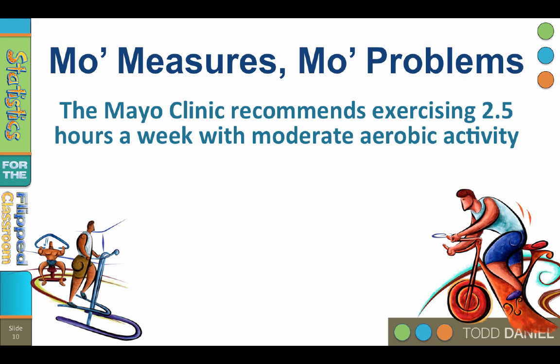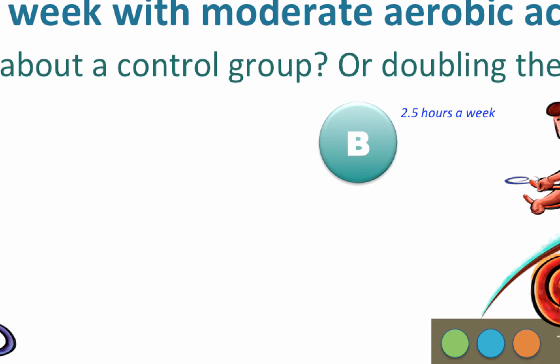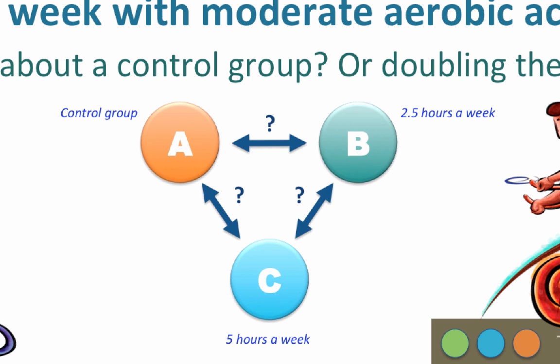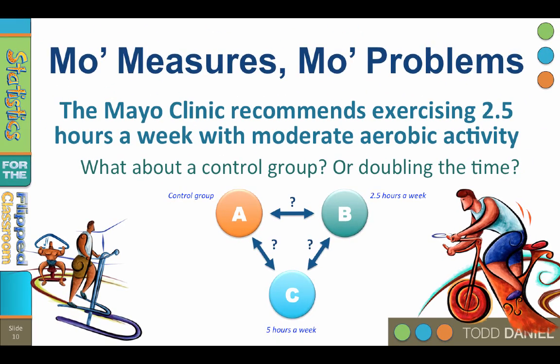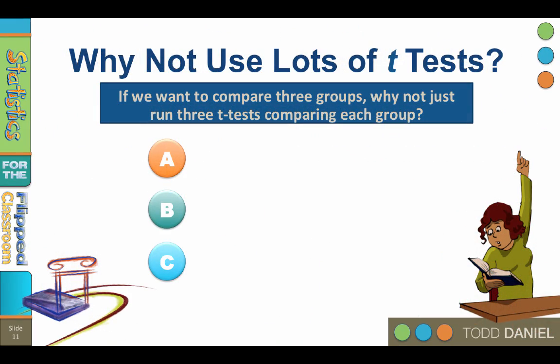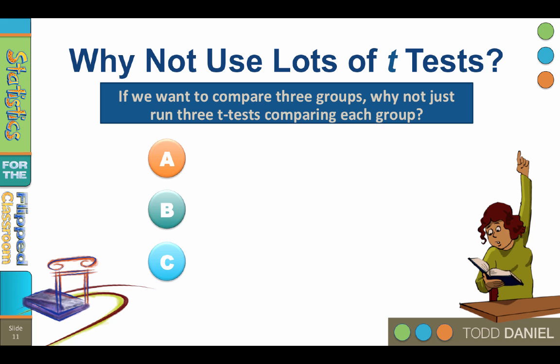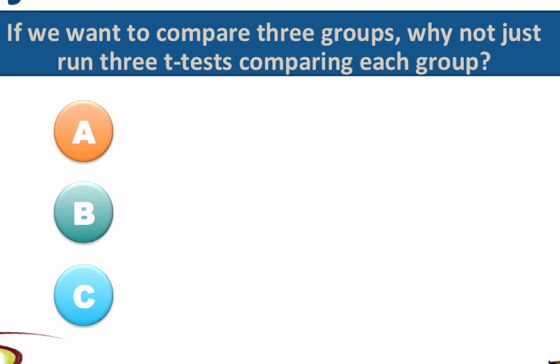Let me illustrate this problem with an example about exercise. The Mayo Clinic recommends exercising 2.5 hours per week with moderate aerobic activity for your health. What if we wanted to compare people who exercise 2.5 hours per week with a control group that does not exercise at all? And while we are at it, why not add another group that exercises for five hours per week, doubling the recommended time — will that double the health benefit? Now this might seem like a good time to use our t-tests. We have three groups: A, B, and C.